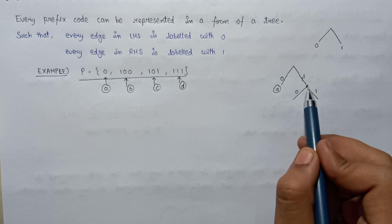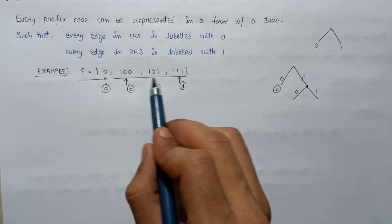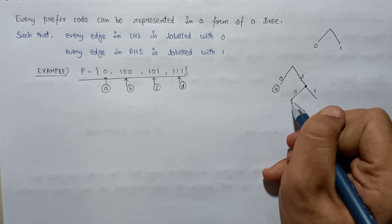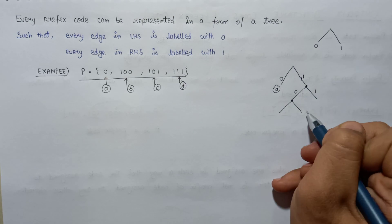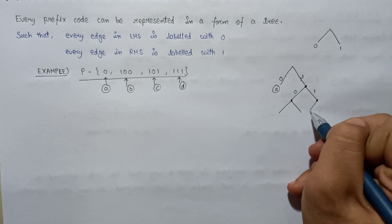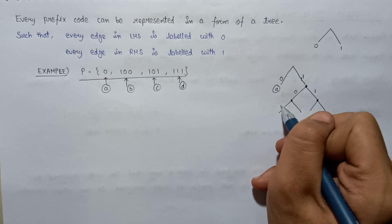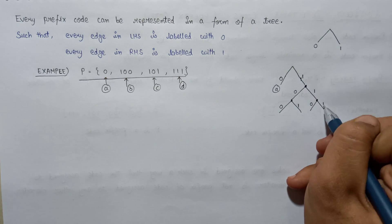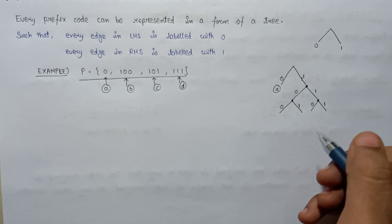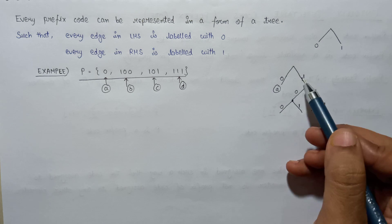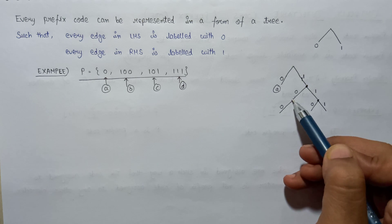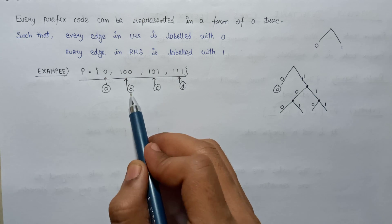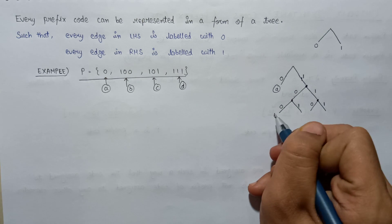The code word 11 — is 11 present in this set? No, it is not. So the procedure continues from both branches. We assign 0 in the LHS and 1 in the RHS. The code word becomes 100. Is 100 present in this set? Yes, it is at B. So we write B here.